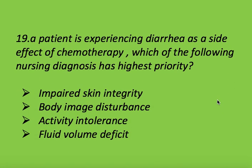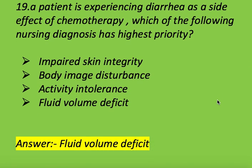A patient is experiencing diarrhea as a side effect of chemotherapy. Which of the following nursing diagnoses has the highest priority? Options: impaired skin integrity, body image disturbance, activity intolerance, and fluid volume deficit. Right answer is fluid volume deficit. The nursing diagnosis with highest priority is fluid volume deficit.